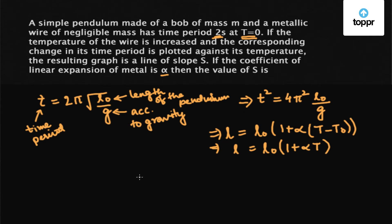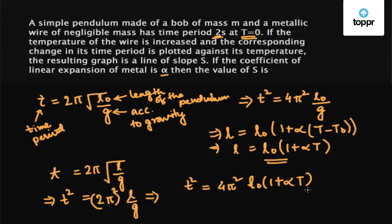So the new time period will become t = 2π√(L/g). Now squaring both sides, we get t² = 4π²L/g, which gives us t² = 4π²[L₀(1 + αt)]/g.